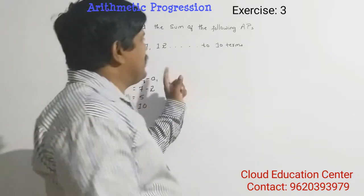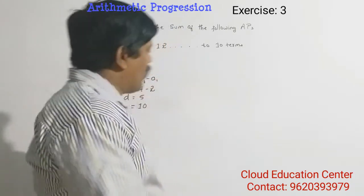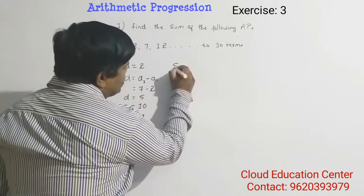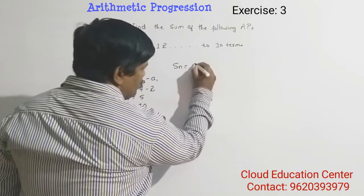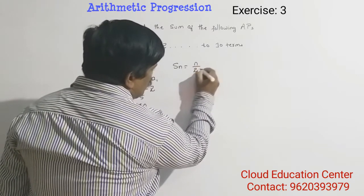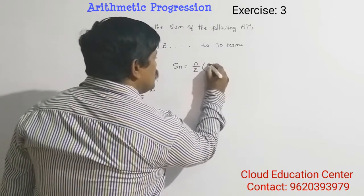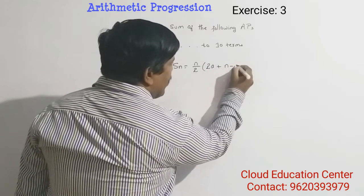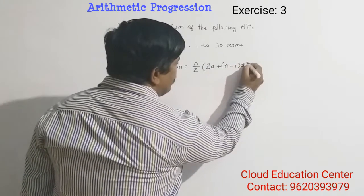So now we want the sum of the 10 terms. We know that formula: S_N is equal to N by 2 into 2A plus N minus 1 into D.